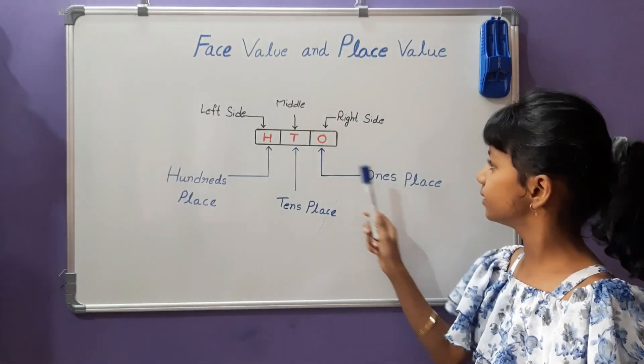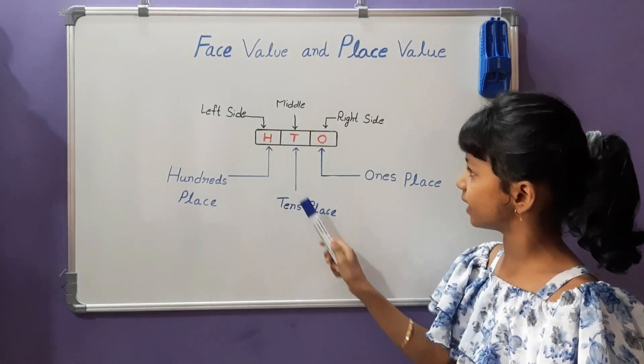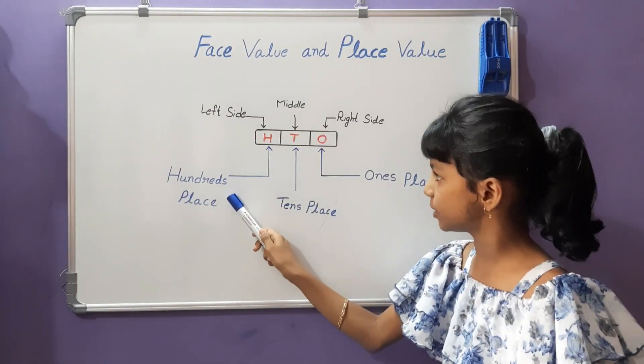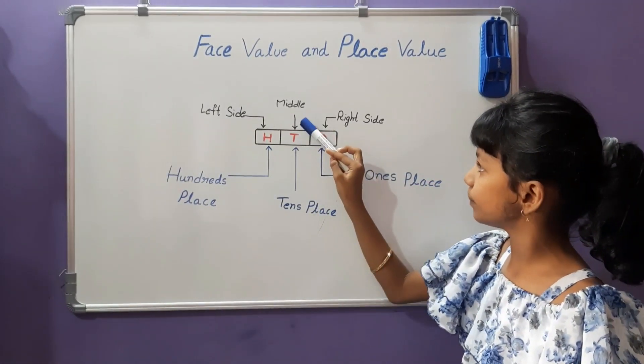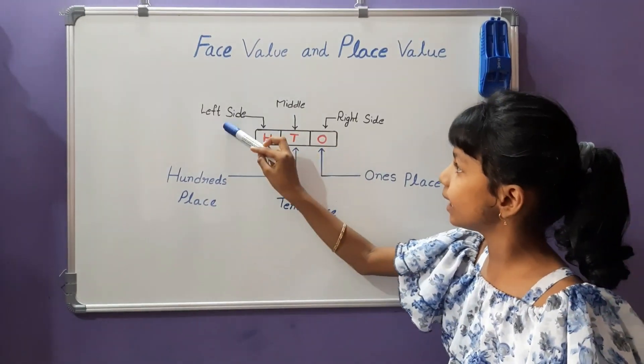O, it is 1's place. T, it is 10's place. H, it is 100's place. O is at right side. T is in middle. H is at left side.